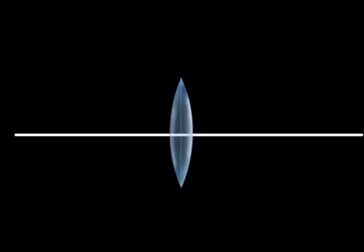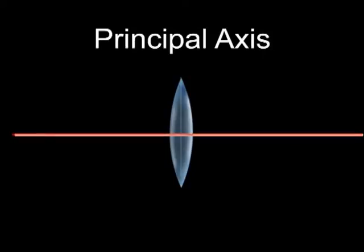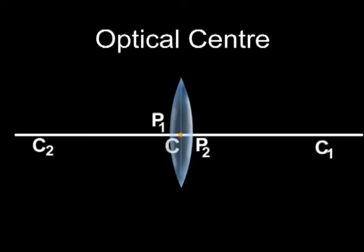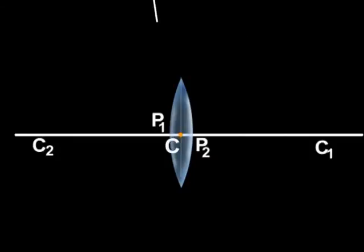Some important terms related to lenses are principal axis, that is defined as a straight line passing through the centers of curvatures of two surfaces of a lens. And then the optical center, which is a point lying on the principal axis of the lens, so that a ray of light whose refracted path passes through this point will have its emergent path parallel to the direction of the incident ray.